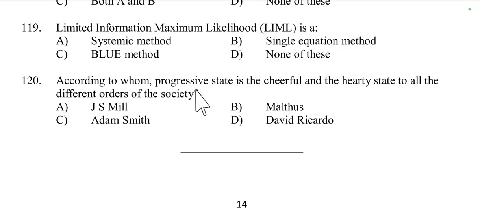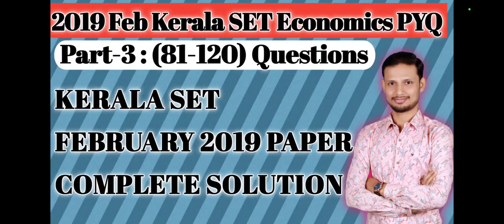Question number 120: According to Adam Smith, the progressive state is the cheerful and hearty state of all the different orders of society. The concept of the progressive state was given by Adam Smith, who noted that this progressive state ultimately leads to a stationary state. Option C is correct. That concludes today's session on Kerala SET Economics 2019. Please like the video, comment your doubts, subscribe for more updates, and in the next part we will discuss 2018 Kerala SET. Thank you all, Jai Jagannath.